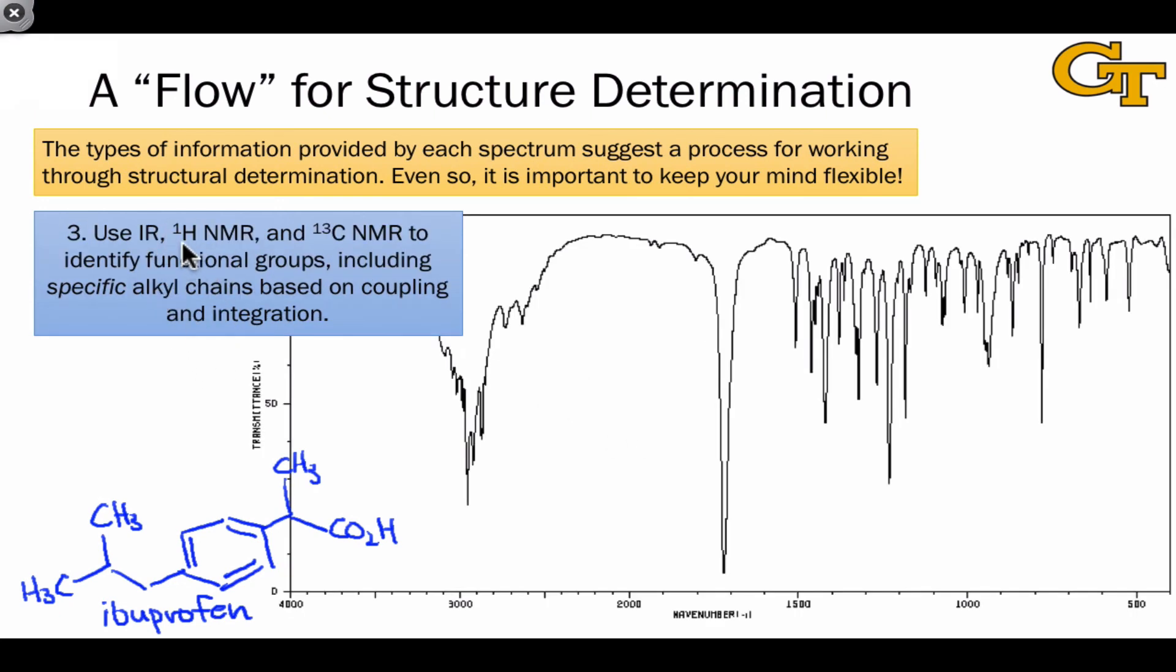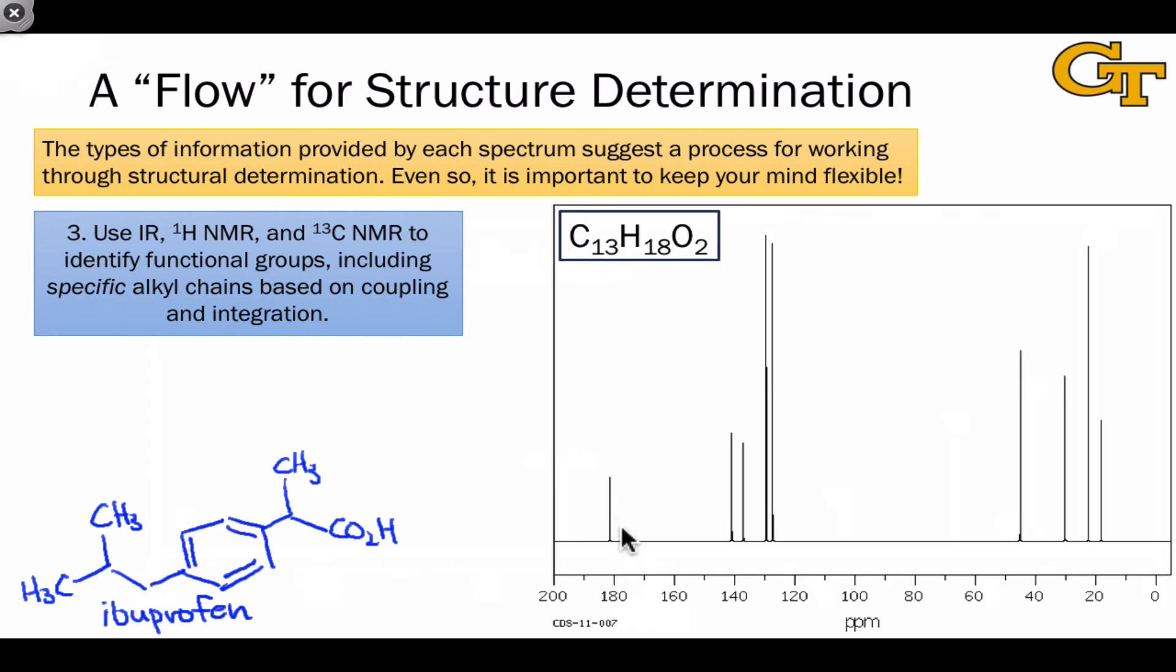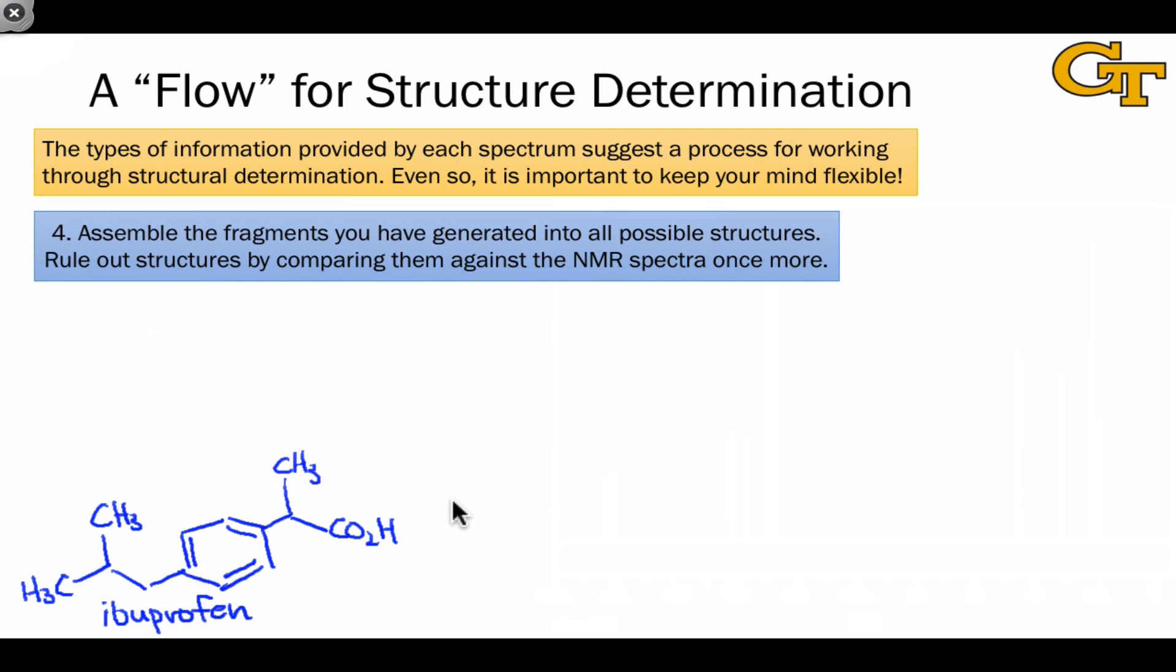Next, use the infrared, proton NMR, and carbon-13 NMR spectra to identify functional groups, including specific alkyl chains based on coupling and integration. We didn't use the carbon-13 NMR spectrum directly in this example, but this reinforces everything that we found in the infrared and proton NMR spectra. And finally, assemble the fragments you've generated into all possible structures, and rule out impossible structures by comparing them against the NMR spectra one more time.